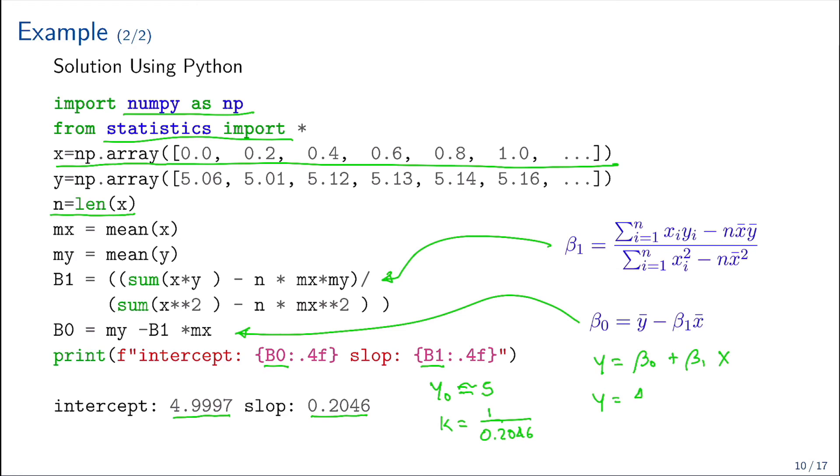we have that y equals beta0, 4.99, plus beta1, which is 0.2046 multiplied by 1.3. That gives us a prediction of the length of 5.27 inches.